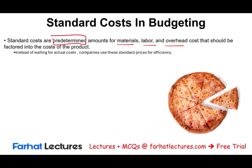Simply put, instead of waiting for actual costs to incur, a company will have to determine — they will have to estimate, they will have to guess — how much labor, cost, overhead, and material will cost them to produce one unit, whatever they are producing. In this example, I'm going to start by illustrating the concept of making a pizza — how much labor, material, and overhead should cost us.